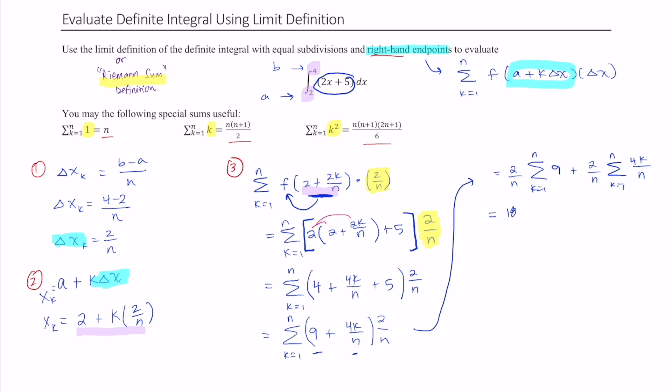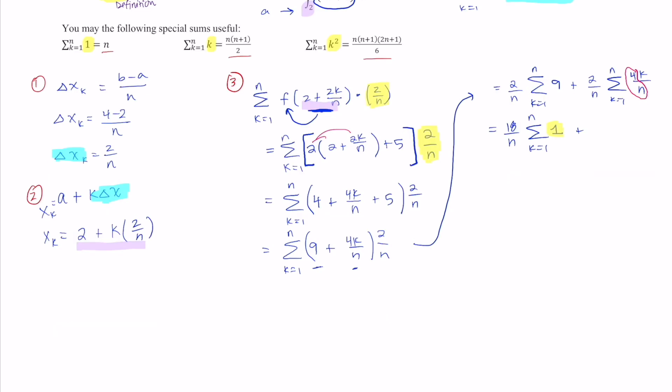Which is good because again we know the summation of k. So continuing to simplify this we get 18 over n times, well what is the summation of just a constant 1? That's just equal to n. And then we have 8 over n squared, and what is the summation of k? That's n times n plus 1 all over 2.